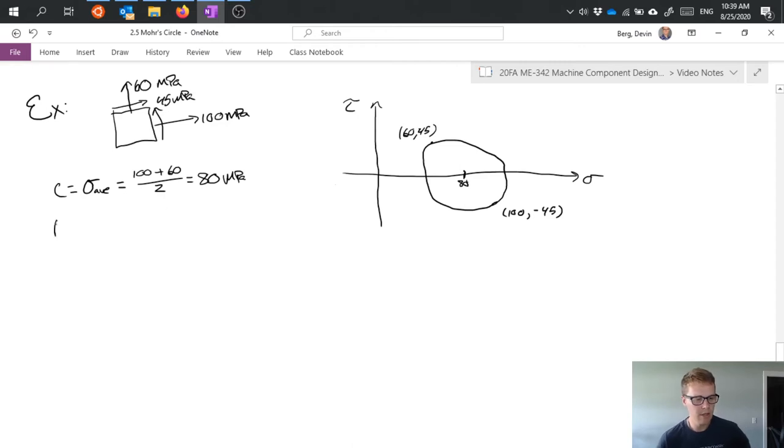I can also calculate the radius using the equation I had which is square root of in this case 100 minus 60 over 2 squared plus tau xy which is 45 squared all of that under a square root.